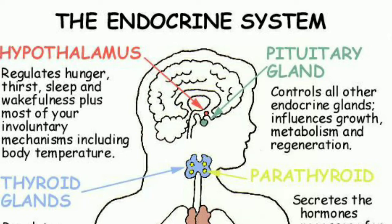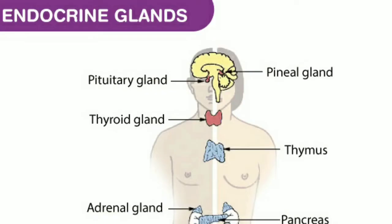The second gland is the pituitary gland. This little gland is only about the size of a pea, but it has a big job. It makes hormones that control several other glands such as the thyroid gland, adrenal gland, ovaries, and testicles. The pituitary gland is in charge of many different functions including how your body grows. It is located at the base of your brain.